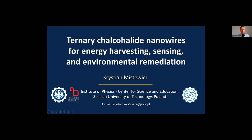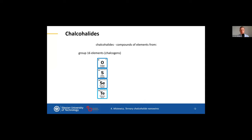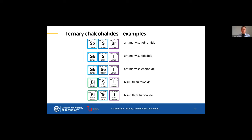Chalcogenide halide nanowires for energy harvesting, sensing, and environmental remediation. The chalcogenide halides are compounds of chemical elements from group 16 — the chalcogens — and group 17 — the halogens. In my research I am strongly interested in group 15 ternary chalcogenide halides, and here we have different examples of these materials.